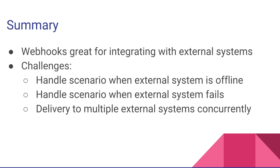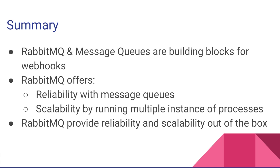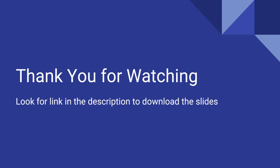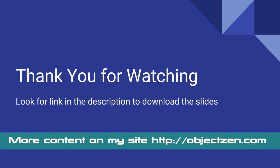In summary, webhooks are great for integrating with external systems, but come with challenges. First, you have to handle the scenario when the external system is offline. You also have to handle when external systems fail, and potentially handle scalability with delivering to multiple external systems concurrently and handling intermittent failures between them. RabbitMQ and message queues are building blocks for webhooks. By using RabbitMQ, you gain reliability with message queues and scalability by running multiple instances or processes — reliability and scalability out of the box, with no need to program from the ground up. Thank you for watching, and you can download the slides by looking for a link in the description below.